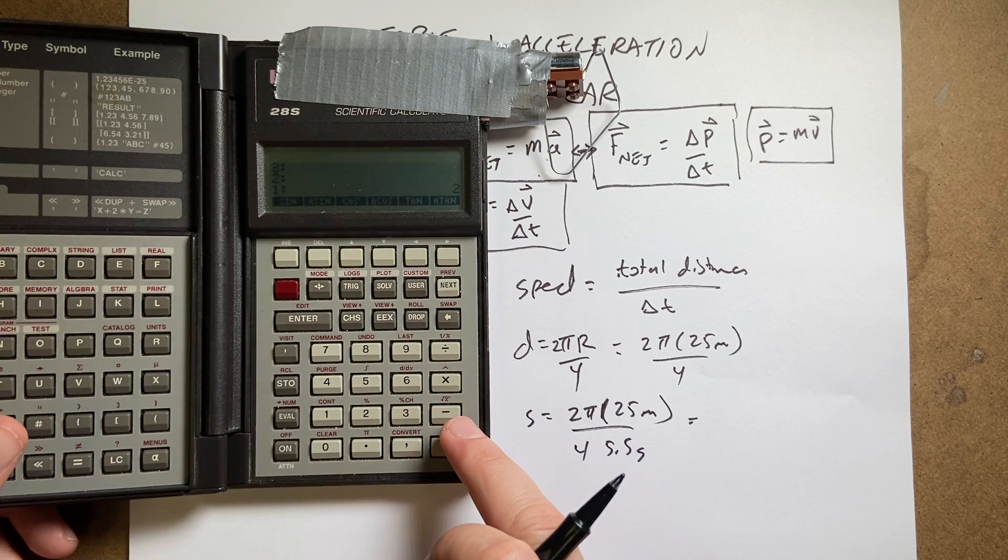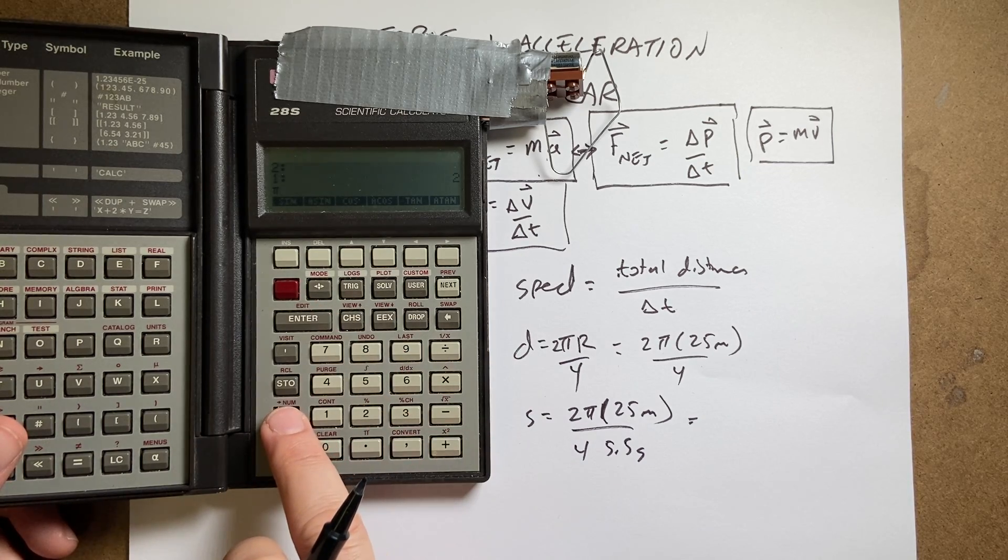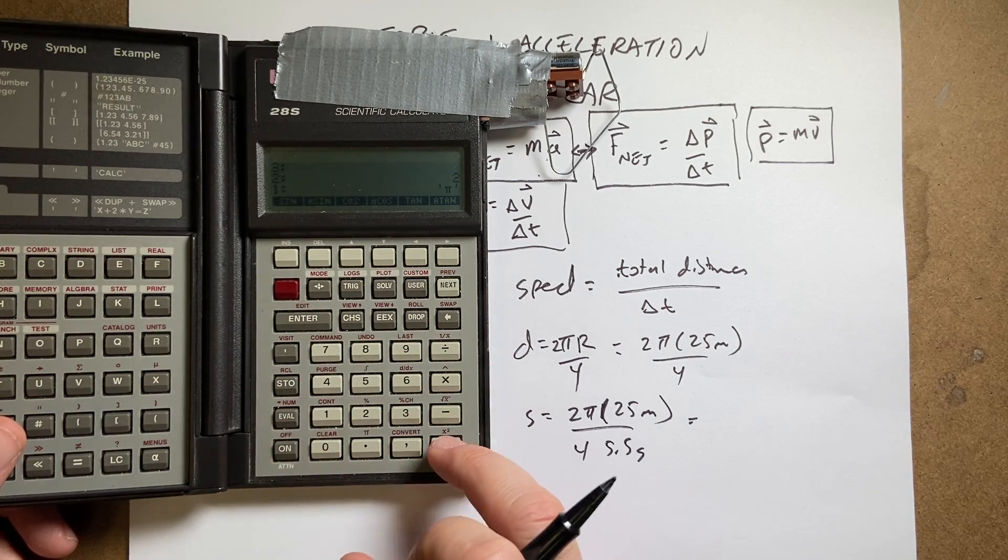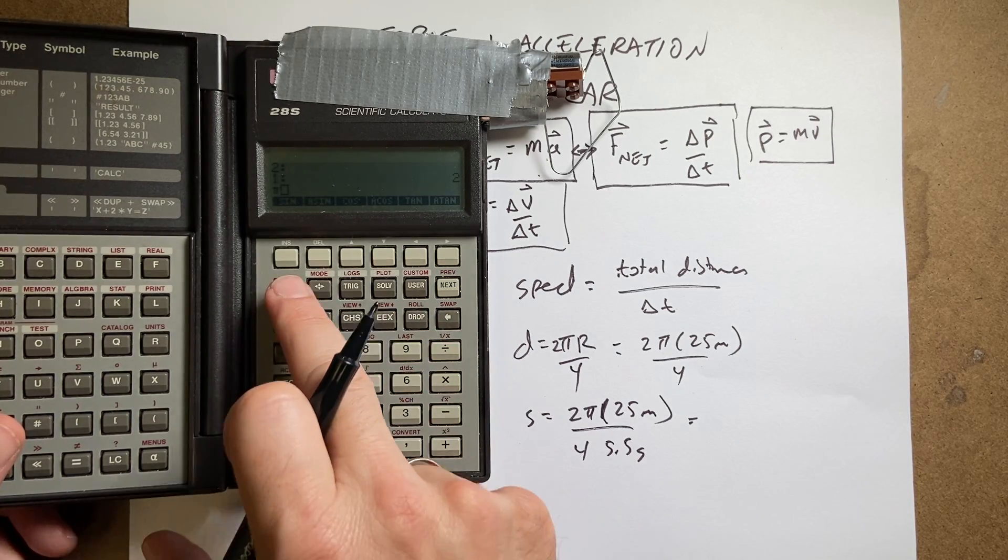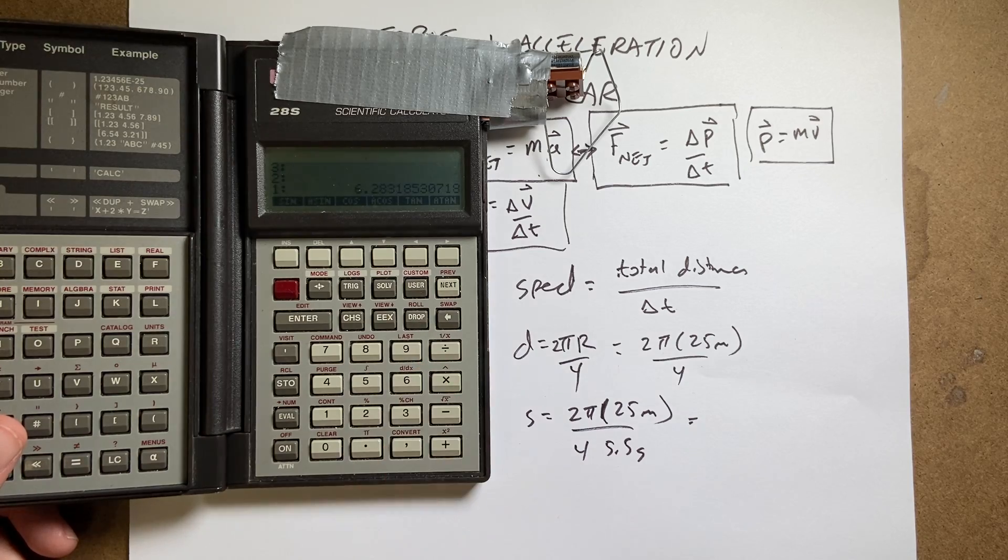So 2 enter pi evaluate, no, drop, I know, it's pi, turn it into a number. Yeah, there we go. Times.